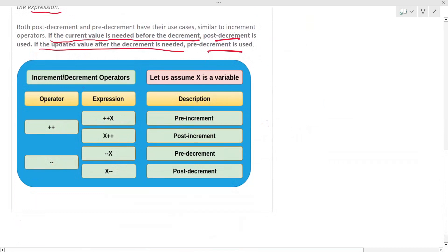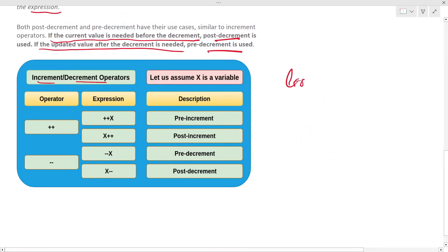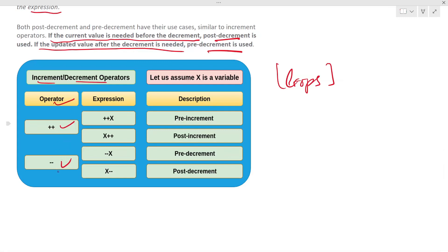In this video we learned how to use increment and decrement operators. We will use them more when we work with loops, which we will explore in the future. The operators are: plus-plus for increment and minus-minus for decrement. Plus-plus X is pre-increment, X plus-plus is post-increment, minus-minus X is pre-decrement, and X minus-minus is post-decrement.